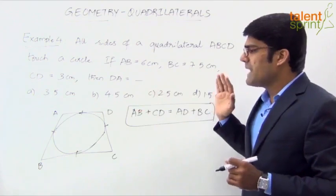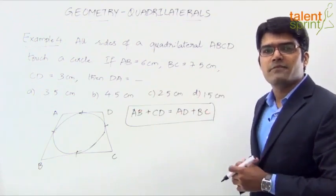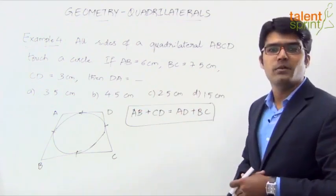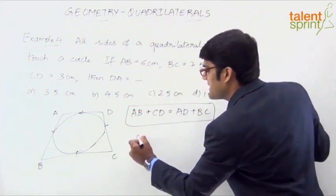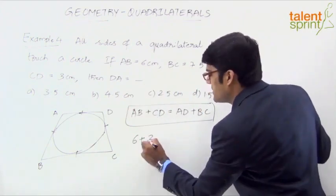So just remember that in such a case, sum of opposite sides have to be equal. Now substitute the values and get the required answer. So what is AB? 6 centimeters. What is CD? CD is 3 centimeters.